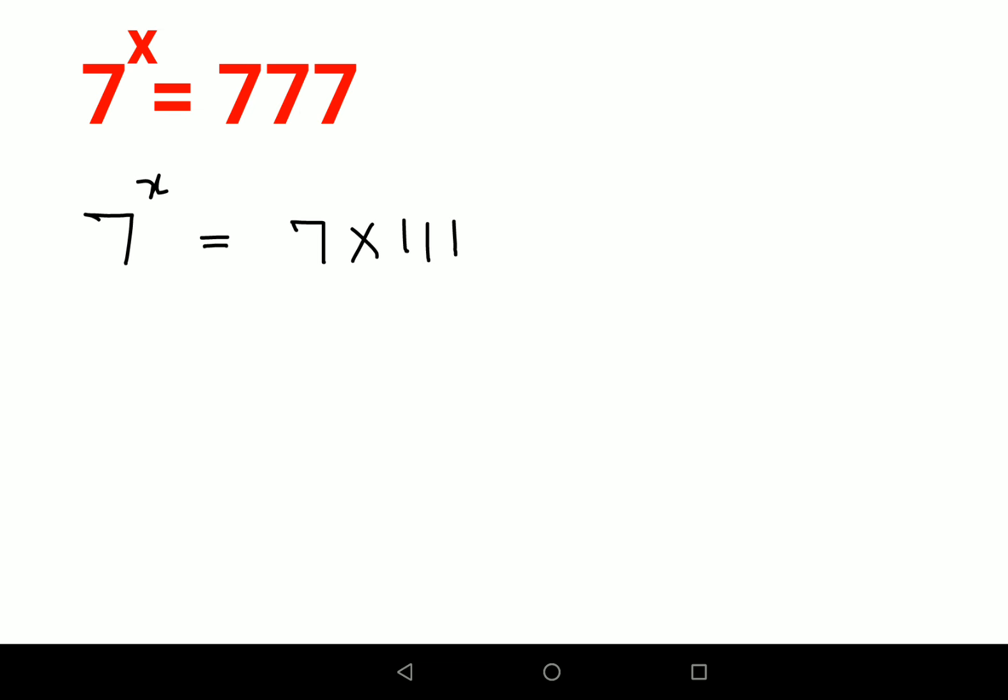Now like I said, we can write this 7 raised to x is equal to 7 into 111. Now after this what we will do? We will take log on both sides. Now in your LHS if you look closely it is looking something like this: log of a raised to m. That can be written as m log a. So this can be written as x log 7 is equal to...